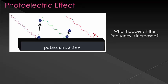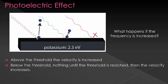Let's look at the issue of increasing frequency. We saw in the simulation that ejected electrons speed up — the velocity is increased. So as long as you are above the threshold frequency, increasing the frequency increases the velocity of the ejected electrons. If you are below the threshold frequency, nothing will happen until the threshold frequency is met, and then the velocity will start to increase. We can do some calculations with this information as well, finding the speed of the ejected electrons using frequency or wavelength, or finding the work function if we know both the frequency and the speed of the electrons. We'll do these in later videos.